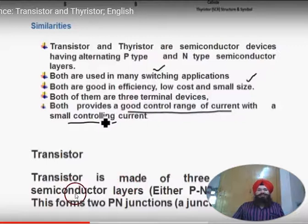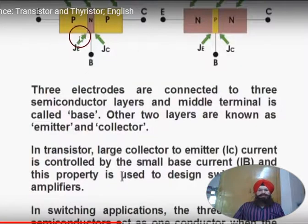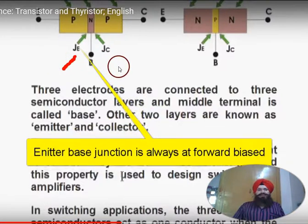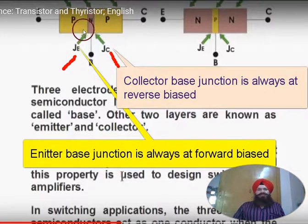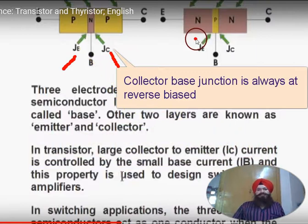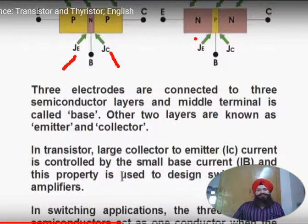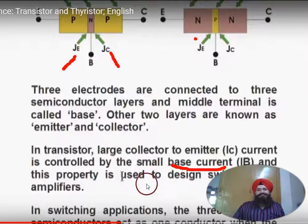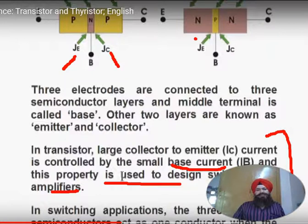The transistor is made up of three alternating semiconductor layers, and there are two PN junctions: the emitter-base junction and the collector-base junction. In the case of an NPN transistor, a large collector-to-emitter current is controlled by the small base current. This is a very important property of transistors — the base controls the current.